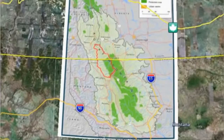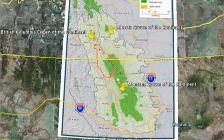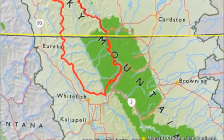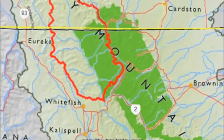What makes the Crown of the Continent so unique can be seen in stories told across the Alberta portion, the British Columbia portion, and the Montana portion of the crown. What really makes it a very unique ecosystem is the fact that Waterton Glacier International Peace Park forms the core of this ecosystem. It's the world's first peace park — an area that draws international attention and visitorship from across the world.